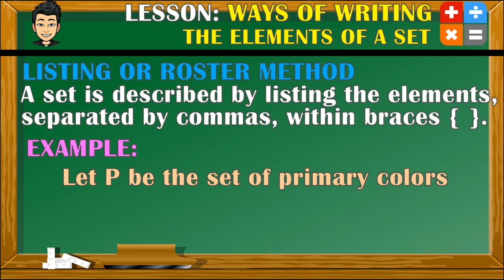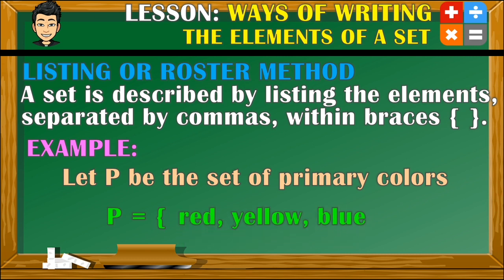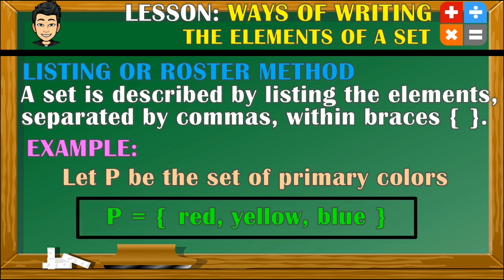For example, let P be the set of primary colors. So set P will have the following elements: red, yellow, and blue. And that's it. This is how you write the elements of a set in listing or roster method.